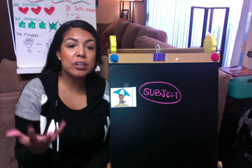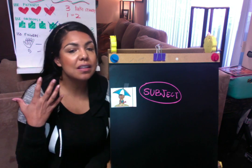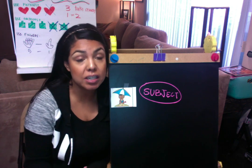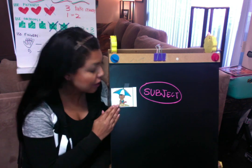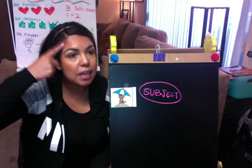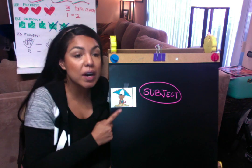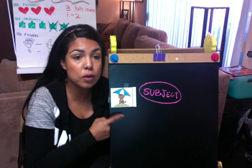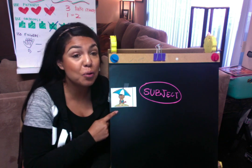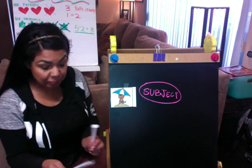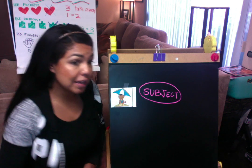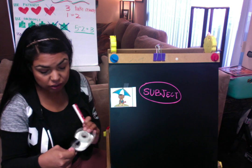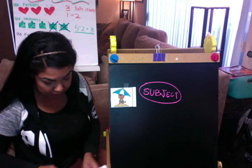So when we think of the word subject, we think about what the sentence is about or what the picture is about. So when we are looking at this picture, we think of the word subject. Let's think about what this picture is about — who is this picture about? That's right, the little boy. So we're going to keep going and look at other pictures to see if we know who the subject is.